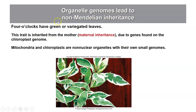This slide shows one example in four o'clock plants, which typically have a variegated phenotype. Organelle genes are inherited typically only from the mother — they exhibit what's called maternal inheritance.